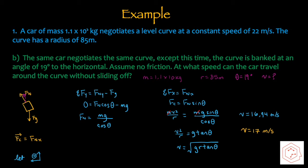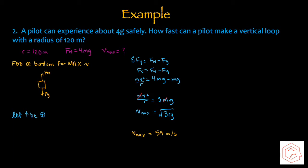Here's a second example. A pilot can experience about 4g safely. How fast can the pilot make a vertical loop with a radius of 120 meters? We know radius, and we know that normal force equals 4 times gravitational force. Since we're solving for maximum speed, that's always when the object is at the bottom of the vertical circle. Drawing the free body diagram at the bottom, normal force is upwards and gravitational force is downwards. Letting upwards be positive, Fc equals Fn minus Fg. Plugging in the formulas, mv squared over r equals 4mg minus mg. Isolating for speed, the maximum speed is 59 m/s.